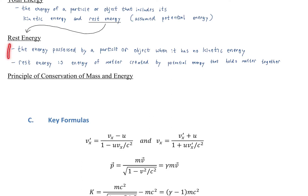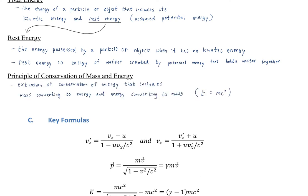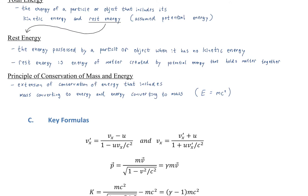We want to apply this idea of rest energy to the classical concept of conservation of energy. Energy cannot be created or destroyed; it is one of the conserved quantities like momentum and angular momentum. We also have an extension of conservation of energy that includes mass converting to energy and vice versa, using the familiar equation E equals mc squared — not just throwing it out trivially, but showing where it comes from via Einstein's special relativity postulates.